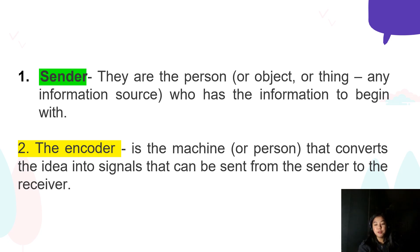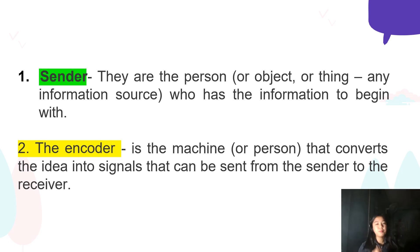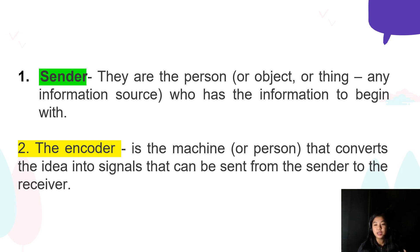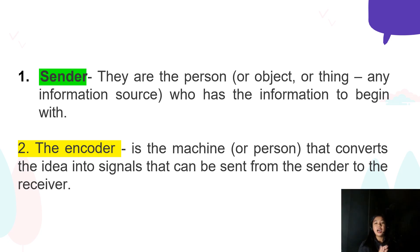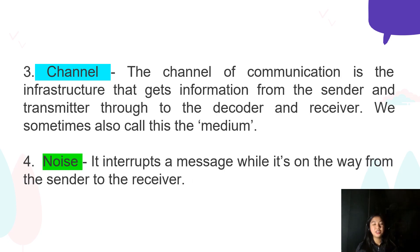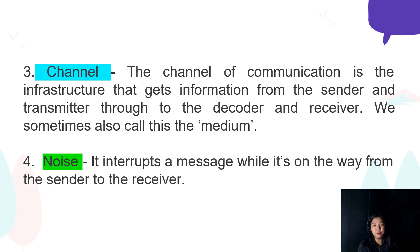Let's define the components one by one. The sender is the person who has the information to begin with — they are the initiator of the conversation, the one who will initiate what is to be discussed. The encoder is the machine or person that converts the idea into signals that can be sent from the sender to the receiver — it is important to encode the message effectively so that the receiver can receive it clearly. Next, we have the channel — it is the infrastructure that gets information from the sender and transmitter through to the decoder and receiver. We sometimes also call this the medium or the platform.